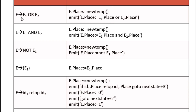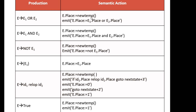For instance, when we have E → E1 OR E2, we create a temporary variable for E: E.place = newtemp. Then we emit the three-address code: E.place = E1.place OR E2.place. When E → E1 AND E2, the same process applies except we use the AND operation: a temporary variable is created for E, then E.place = E1.place AND E2.place.